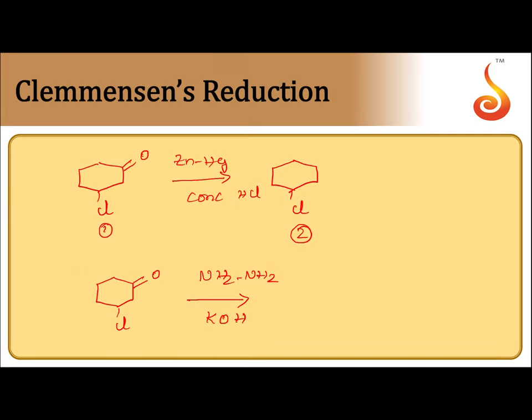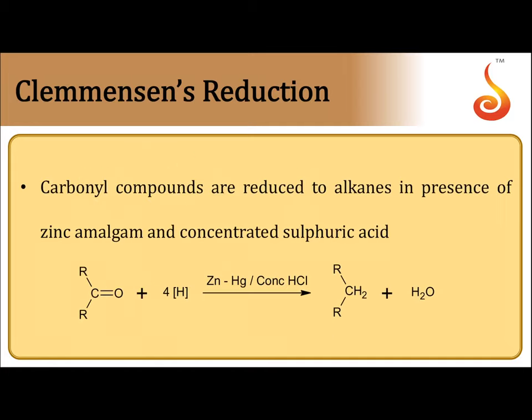If I use hydrazine and potassium hydroxide, in the presence of aqueous KOH the Cl will be replaced by OH, so I will not get the expected product. Therefore I can use Clemmensen's reduction but not Wolff-Kishner reduction for this reaction, because the substrate is alkali-sensitive. Clemmensen's reduction is widely used for reduction of aldehydes or ketones sensitive to alkalis.